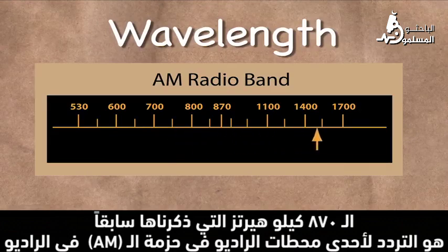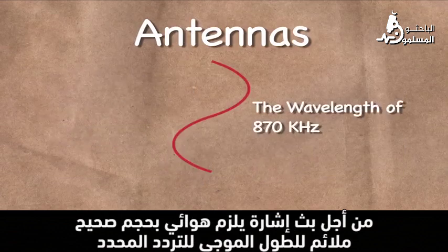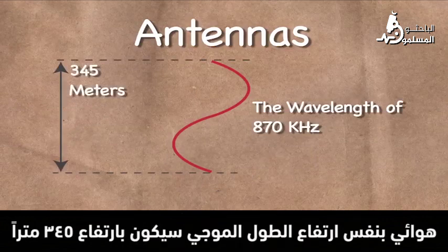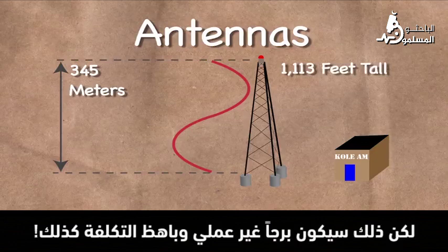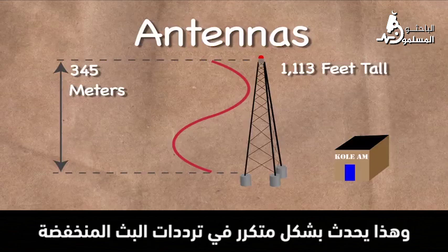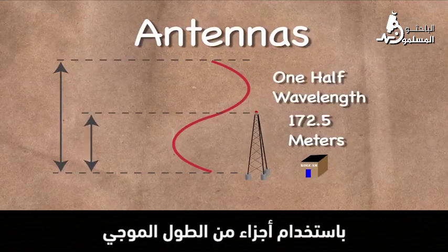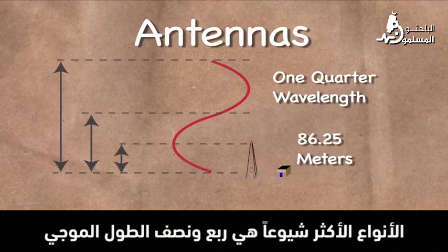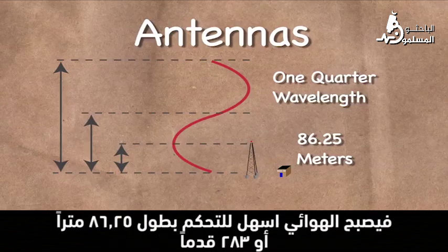That 870 kHz RF signal, mentioned earlier, is the frequency used for one of the channels in the AM radio band. In order to broadcast this signal, an antenna is required of the correct size for the frequency's wavelength. An antenna of the same height as the wavelength would be 345 m tall, or 1,113 ft — a very impractical and costly tower to build. So smaller, more practical sized components are constructed using a fraction of the wavelength, with the most common being one quarter and one half wavelength. In the case of the AM station's antenna, one quarter wavelength is used, making the antenna a more manageable 86.25 m, or 283 ft.